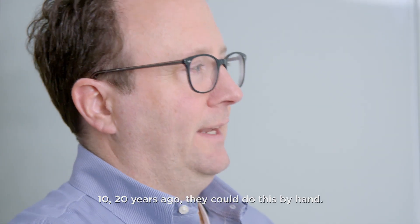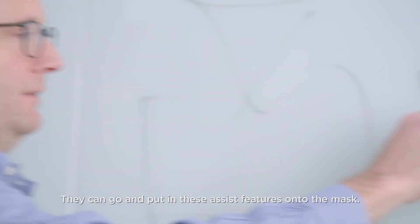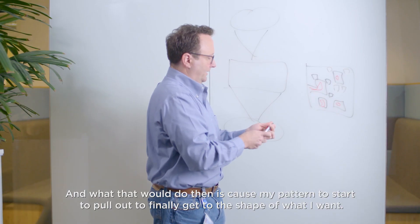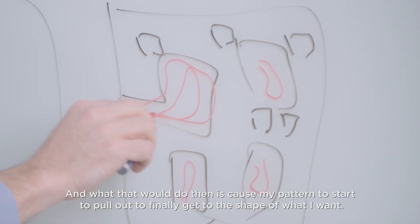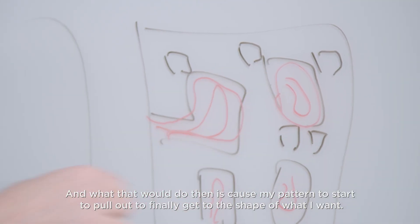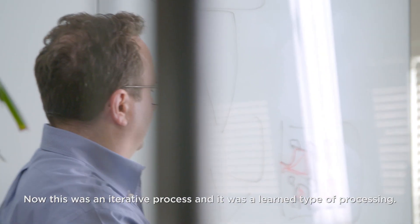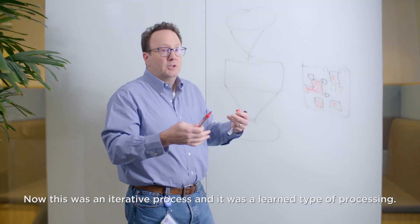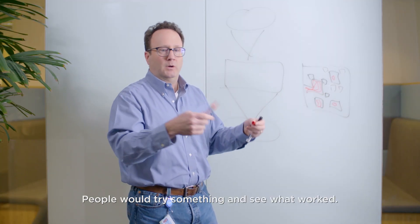10, 20 years ago they could do this by hand. They could go and put in these assist features onto the mask, and what that would do then is cause my pattern to start to pull out to finally get to the shape of what I want. Now this was an iterative process and it was a learned type of processing. People would try something and see what worked.